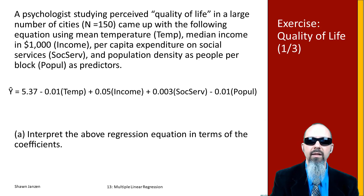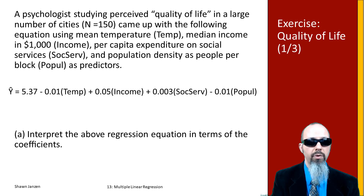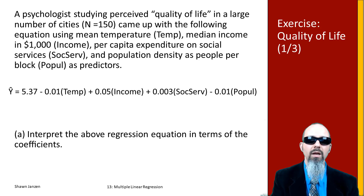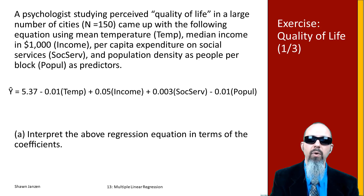For the third variable, per capita expenditure on social services: for each additional dollar of per capita expenditure on social services, it corresponds to a 0.003 unit increase in the quality of life scale, all else equal. And lastly, for each additional person per block, we expect to see an average decrease in the quality of life index of 0.01, holding all other variables constant.